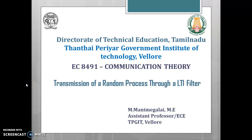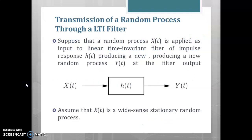Welcome to the video lecture on transmission of a random process through a LTI filter. In this video lecture, we will see what happens if a random process is passed through a LTI filter. A random process basically means a random variable which is a function of time. Here we assume a linear time invariant filter which has an input x(t), which is a random process, an output y(t), and an impulse response h(t).